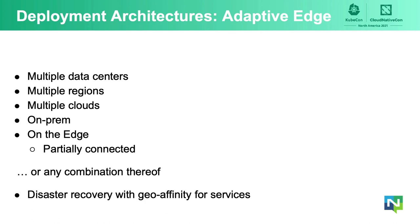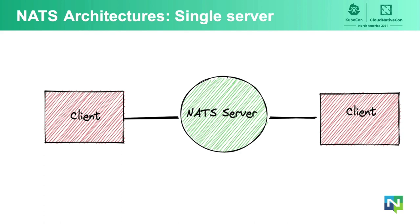As we transition to Matthias' part of the presentation, I want to introduce the last important feature in NATS 2: the flexible deployments architecture. The NATS deployment architectures allow you to deploy on multiple data centers, multiple regions, multiple clouds, on-prem, on the edge — even if that edge is only partially connected — or any combination thereof. The simplest NATS deployment is a single NATS server with clients connecting directly to it.